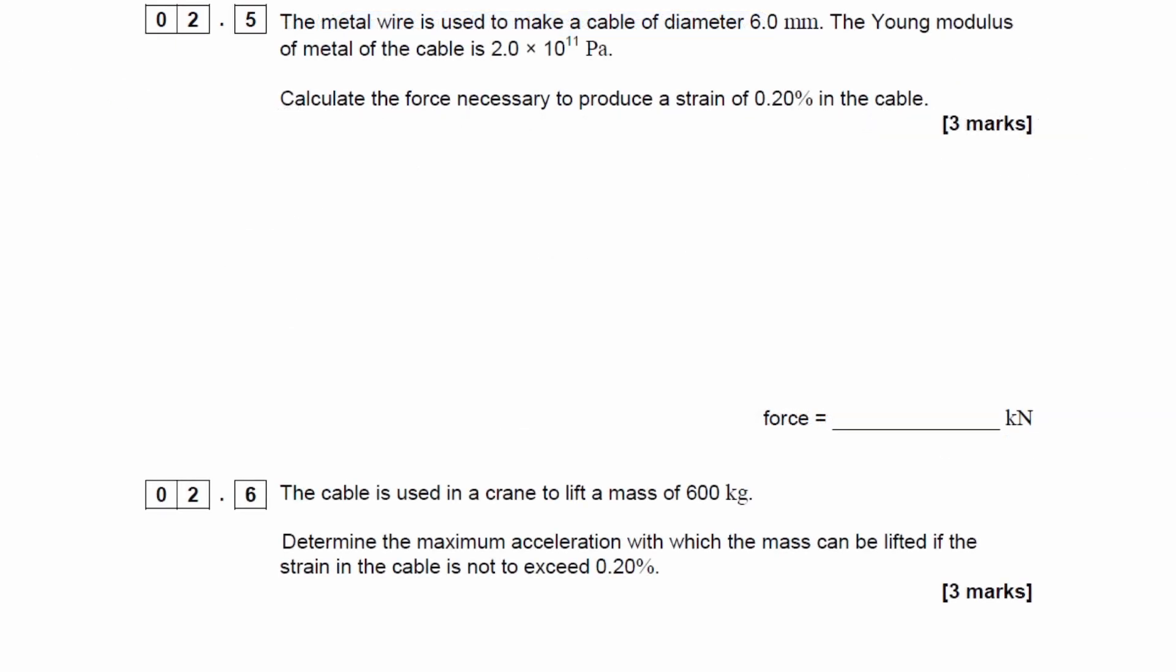The metal wire is used to make a cable of diameter 6mm. The Young modulus of the metal cable is 2 times 10 to the 11. Calculate the force necessary to produce a strain of 0.2% in the cable. So we want to work out force. We have the Young modulus, we have the diameter, we have the strain. Young modulus is equal to stress, force over cross-sectional area, over strain, so then rearranging this for force, we get force is equal to E epsilon A.